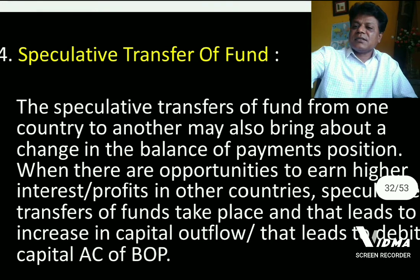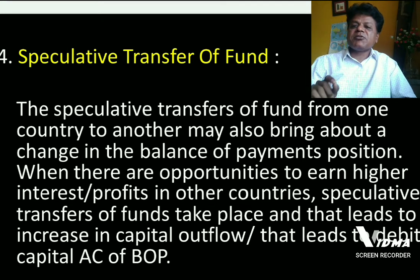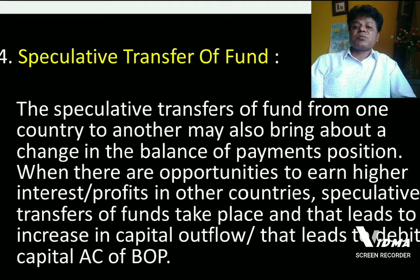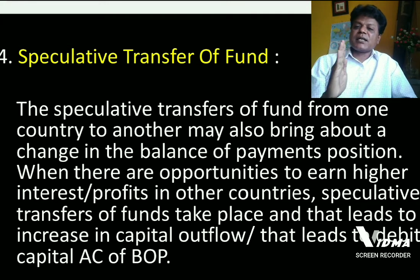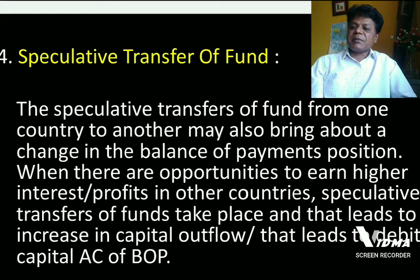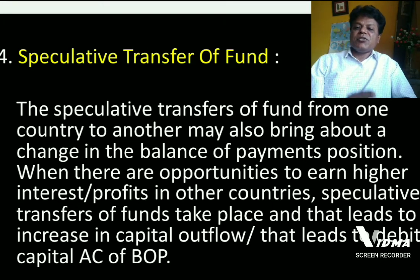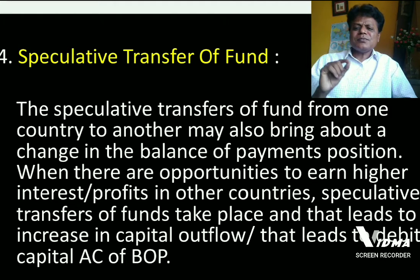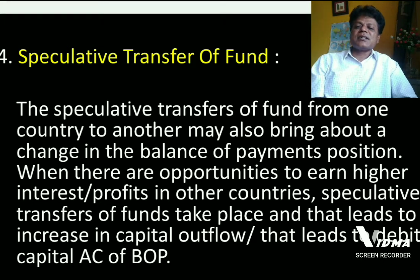The speculative transfer of funds from one country to another may also bring about a change in the balance of payment position. Movement of capital from one country to another will definitely influence the equilibrium of the balance of payment. When there are opportunities to earn higher interest or profits in other countries, speculative transfer of funds may take place, leading to an increase in capital outflow and an increase in debit in the capital account of balance of payment.